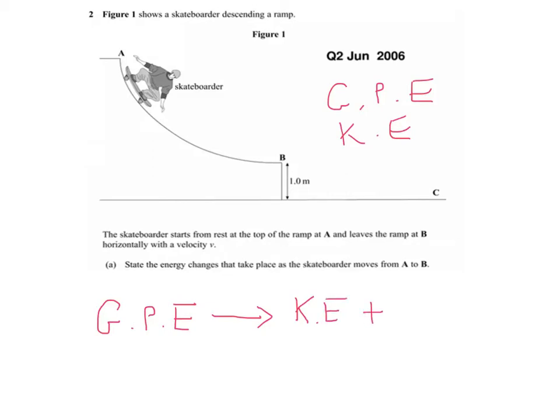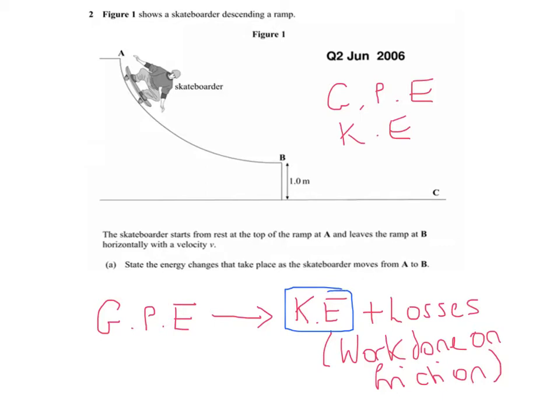What most people wouldn't have on that would be including the losses involved. Now the losses are caused by work done on friction. So obviously the friction will have a force, and when that's applied over a distance, that means that work will be done against that frictional force. And so that would be the complete description of the energy changes. I mean, the majority of it will be transferred to kinetic energy, a very high percentage of it. But this losses are quite a significant effect, which is why this question was looking for that in the answer.